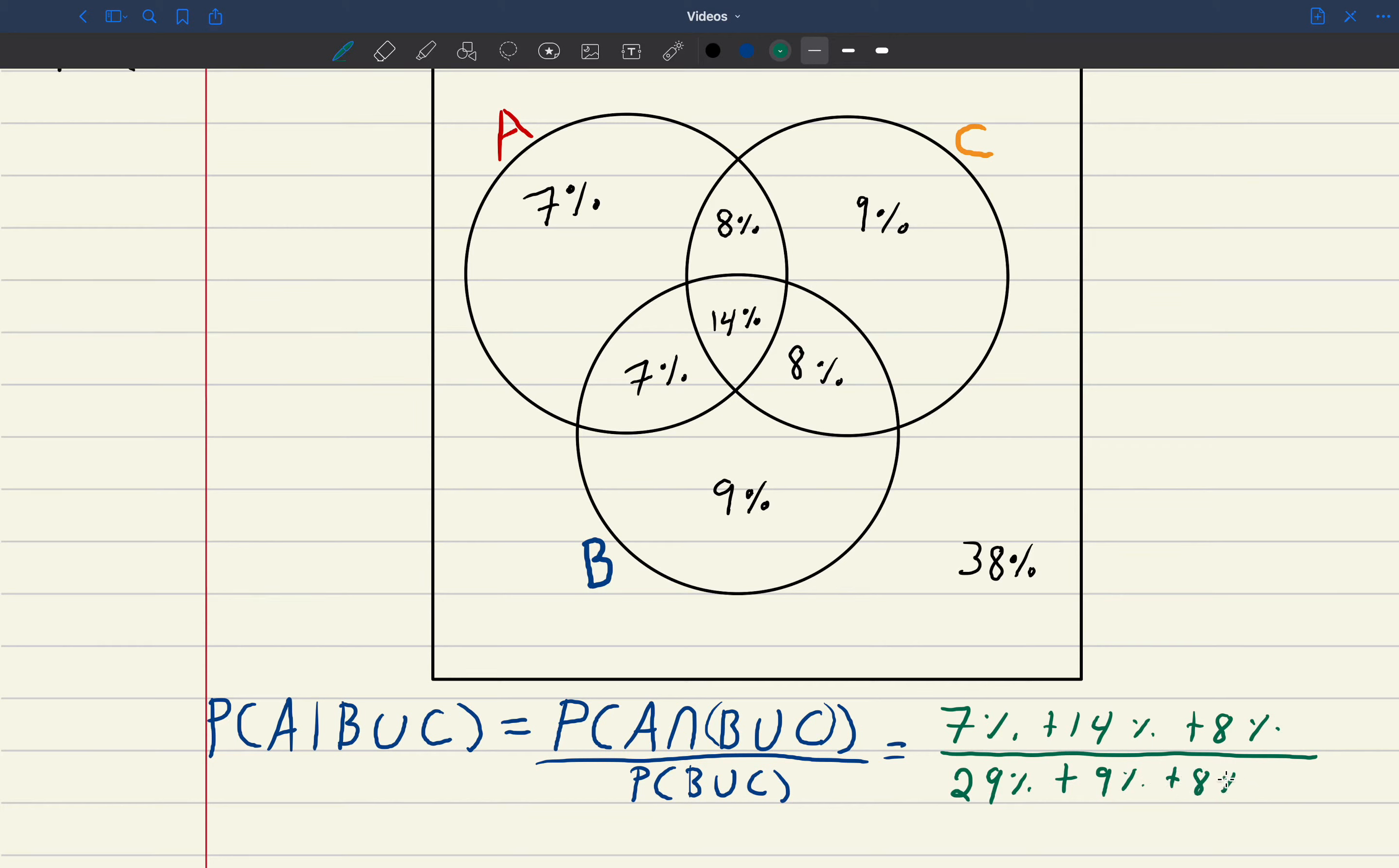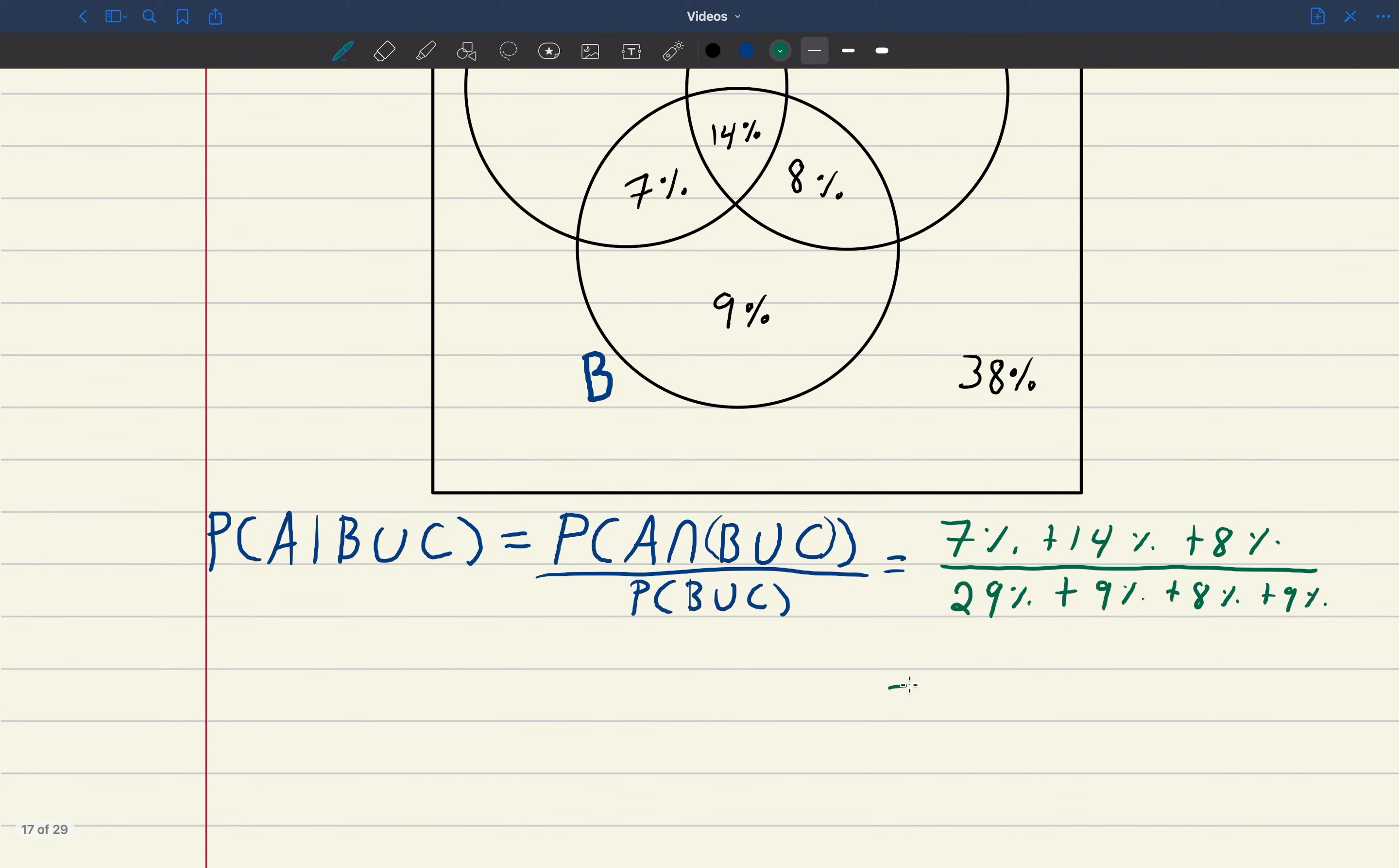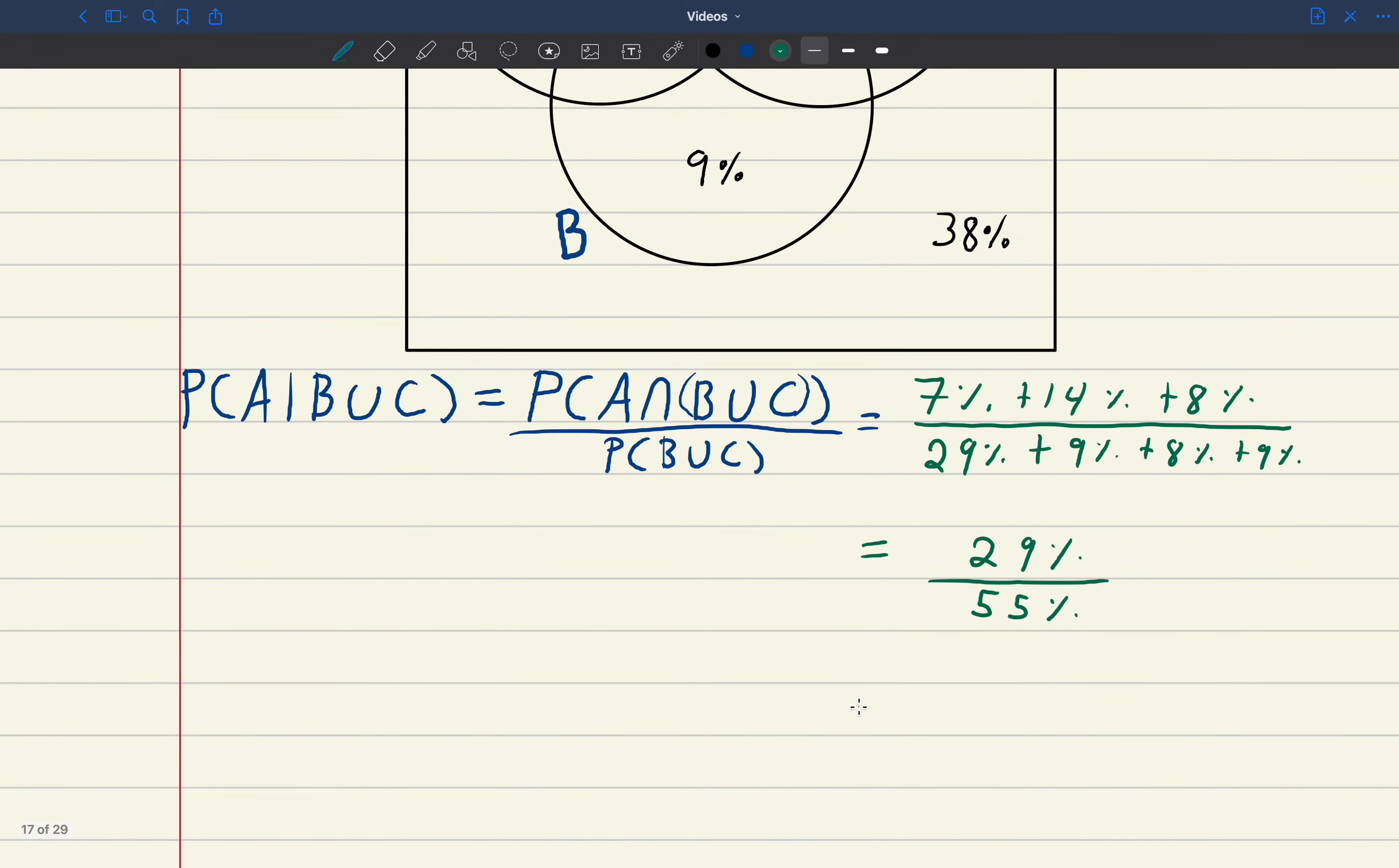And so that would be 9, 8, and 9. So that's 29 and then 18, so it looks like that's 55%. So that's going to be 29% over 55%. We can write that as 29 over 55 as a reduced fraction.